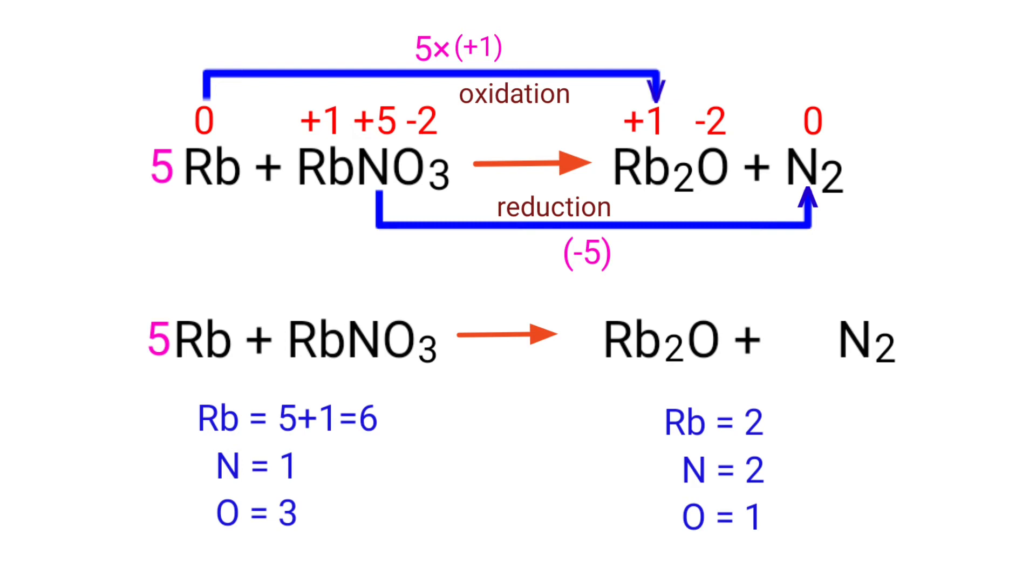To balance the chemical equation, we need to make use of coefficients. A coefficient is a number that we place in front of a chemical formula. We need to balance the oxygen atoms first. To do this, put a coefficient of 3 in front of Rb2O.